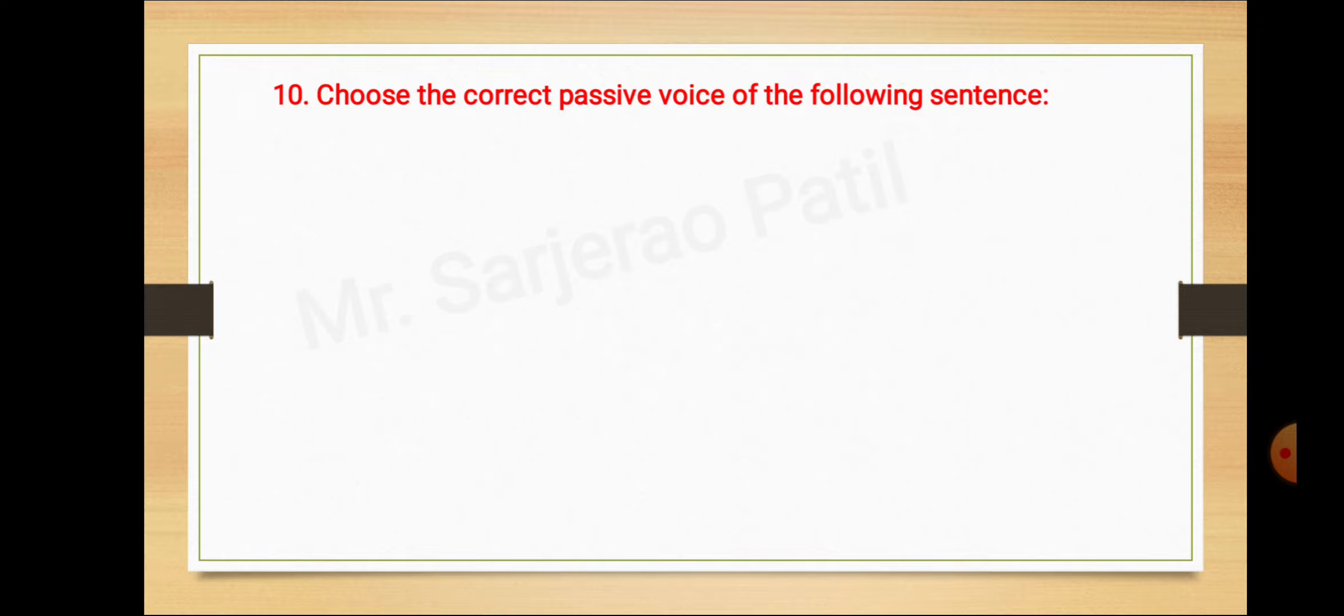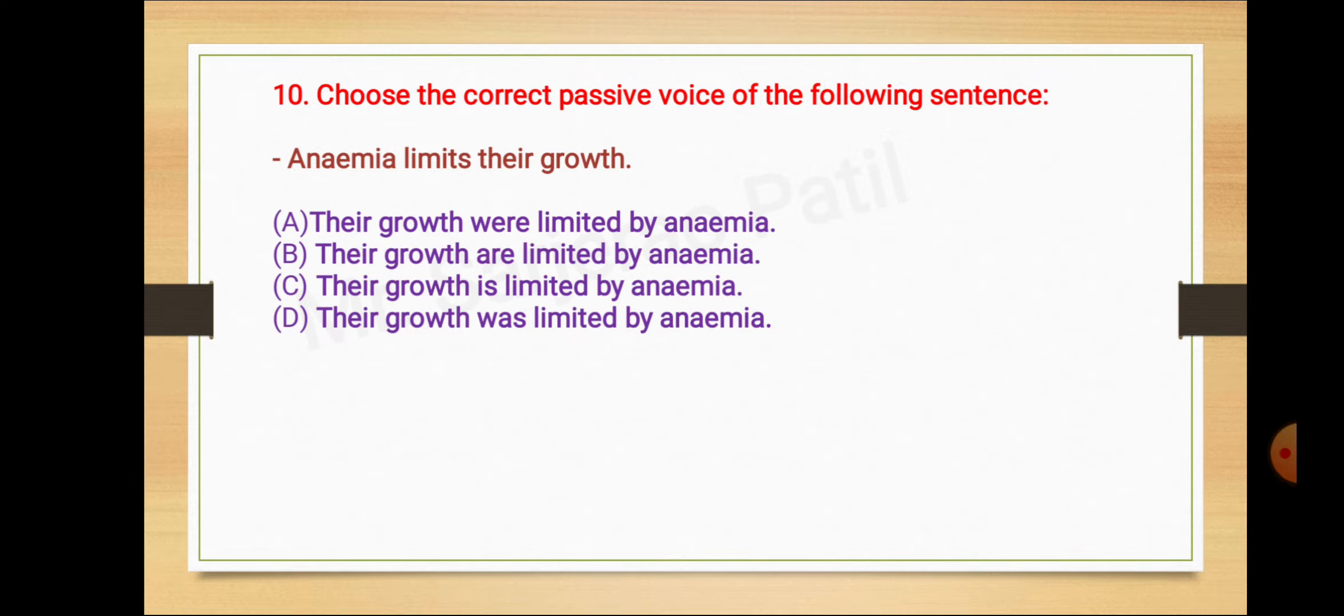Question number 10: Choose the correct passive voice of the following sentence. Anemia limits their growth. This is in simple present tense. The object is growth. Growth is limited by anemia.